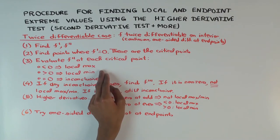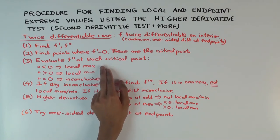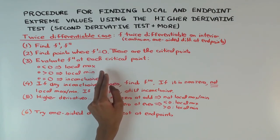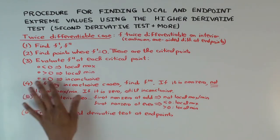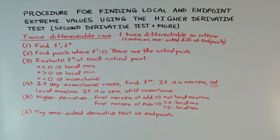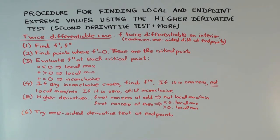For those critical points where you get either of these cases, you can determine whether it's a local max or local min. However, if the second derivative at the point is zero, then you have what's called an inconclusive case — meaning no conclusion. It could be a local max, it could be a local min, or maybe it's neither. If there are no inconclusive cases, you stop here — you've found all the local maxima and minima, since any local max or min must be a critical point. But if there are inconclusive cases, you have to do more work.